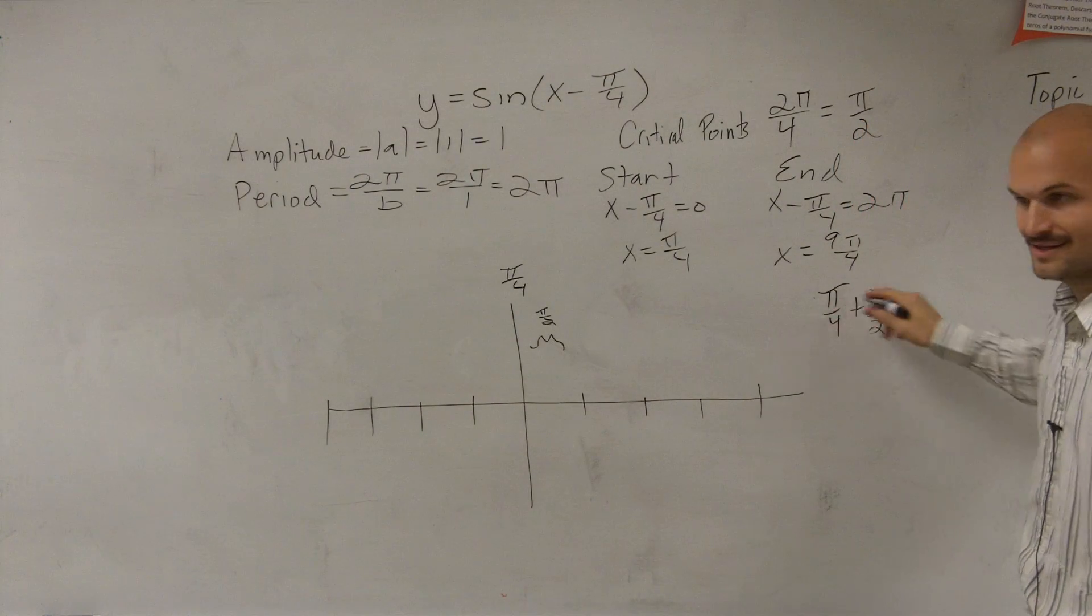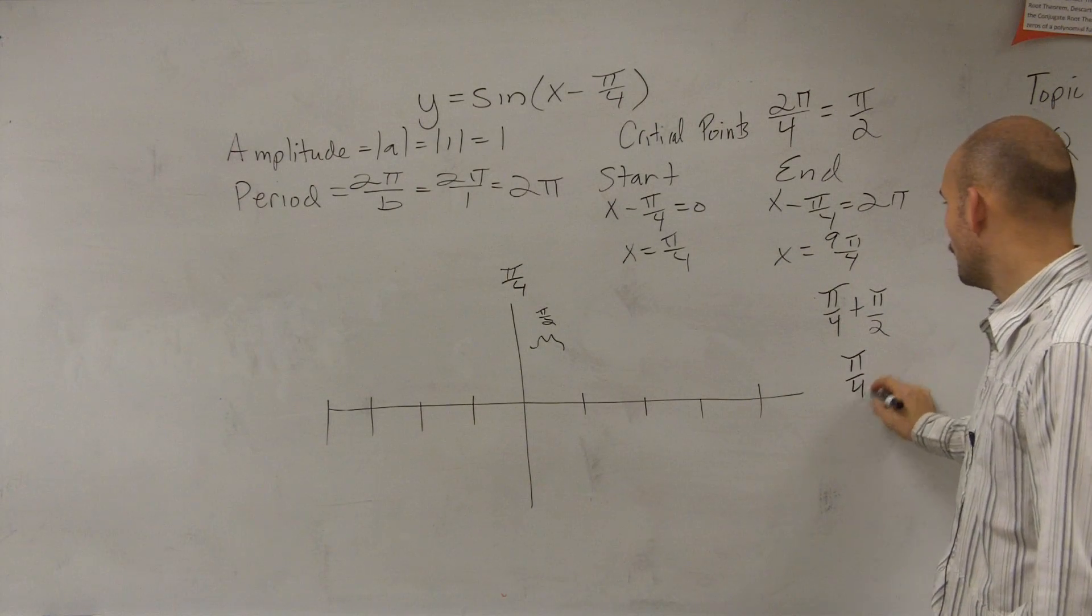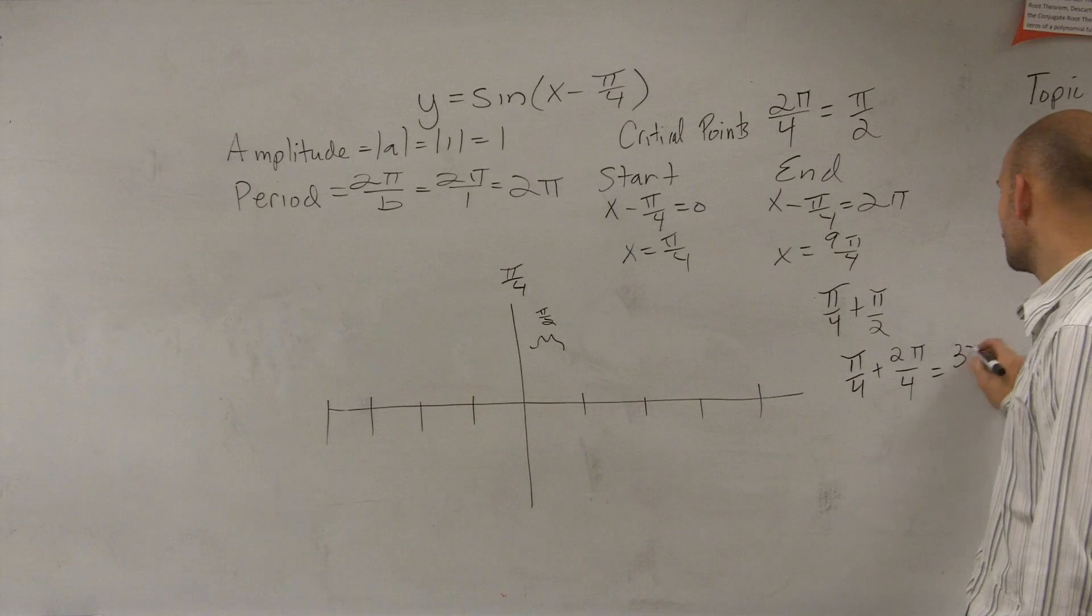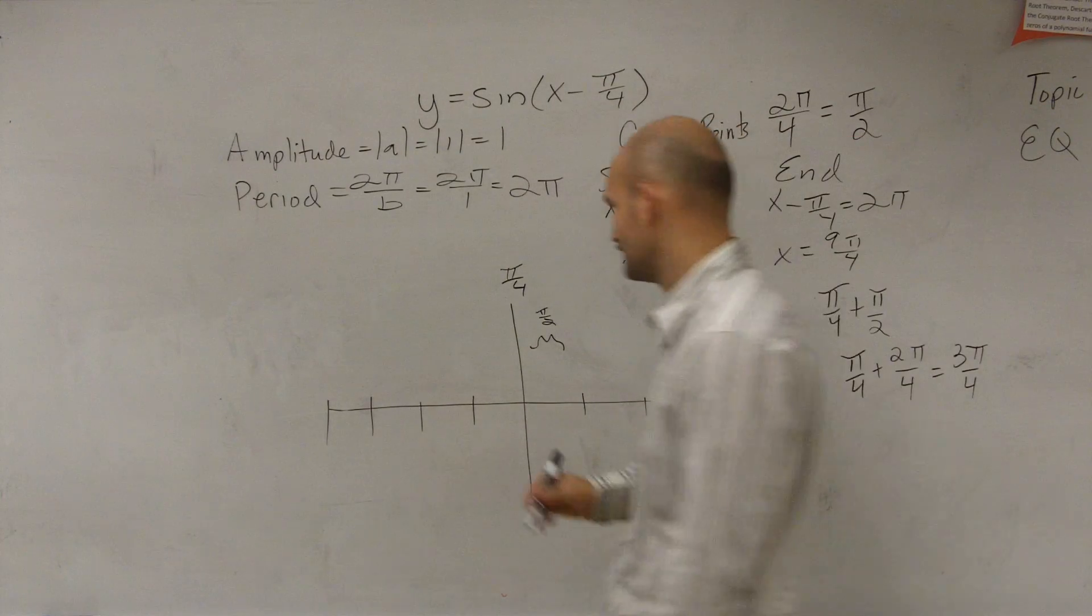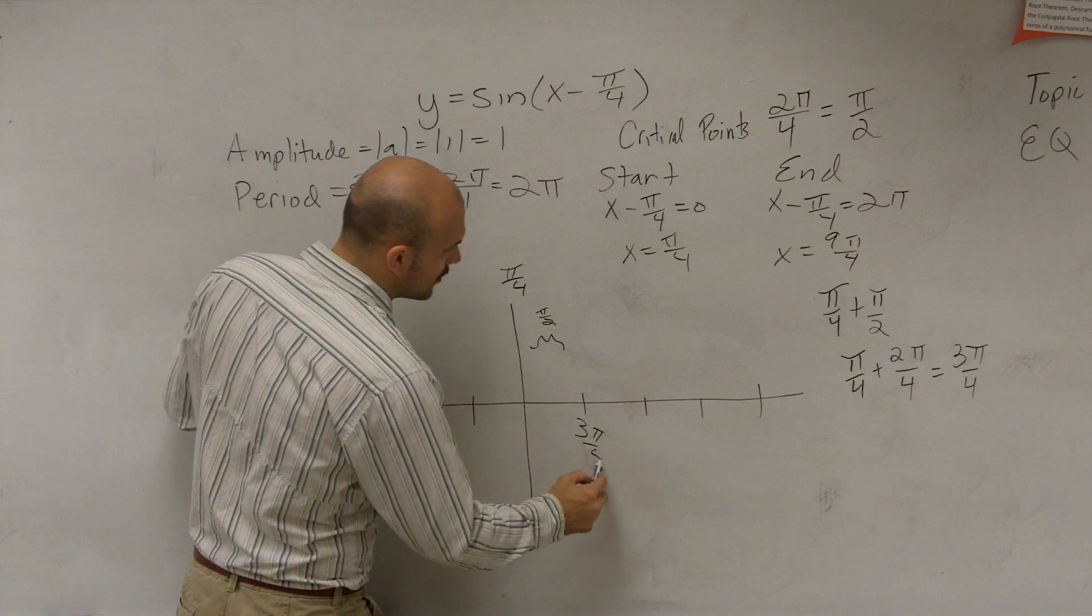So we have π over 4, plus π over 2. You guys are going to have to get really good at fractions. You have to get these to be common denominators. π over 4, plus 2π over 4, equals 3π over 4. So the first coordinate point is 3π over 4.